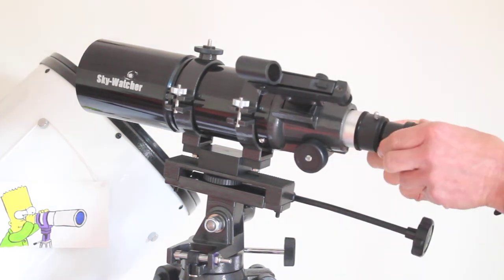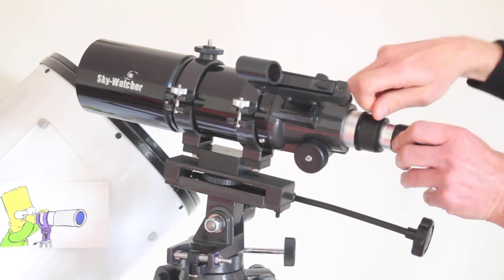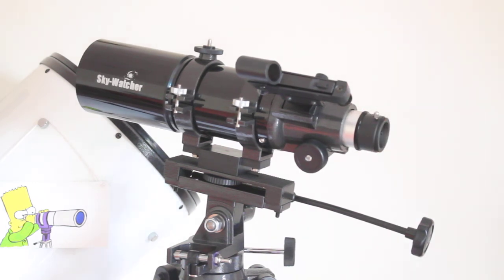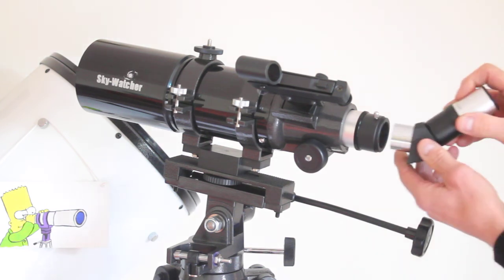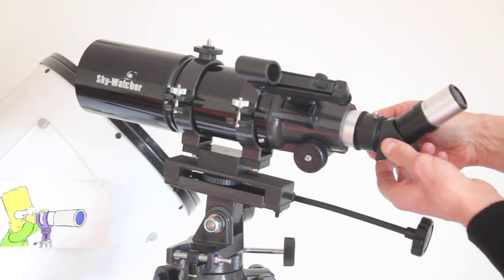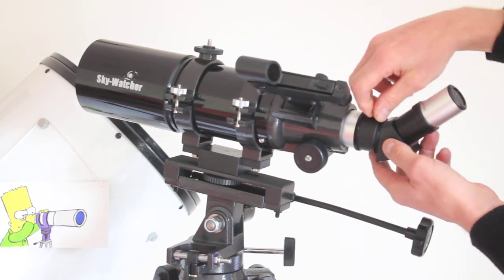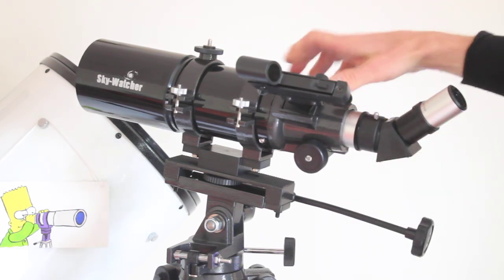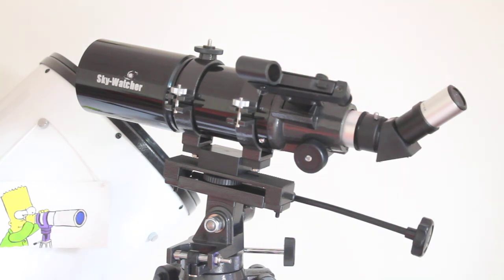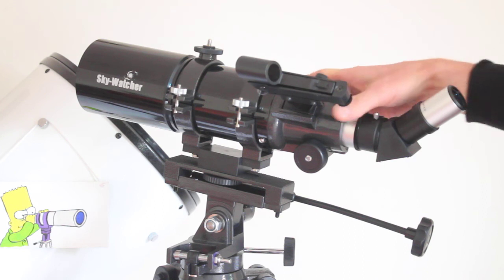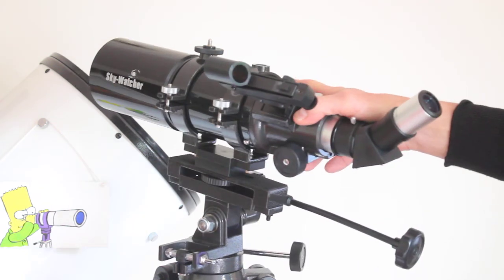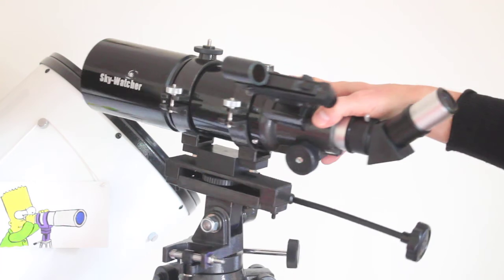That's pretty much a quick rundown of the Sky-Watcher Star Travel or ST-80 telescope. It's a very versatile scope, our best-selling refractor by a long way. You can use it for astronomy, photography, as a guide scope, terrestrial use, or looking at ships at sea. It's one of the most versatile scopes you can get from Sky-Watcher.